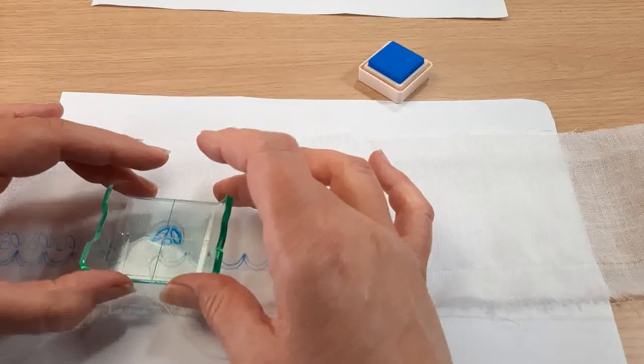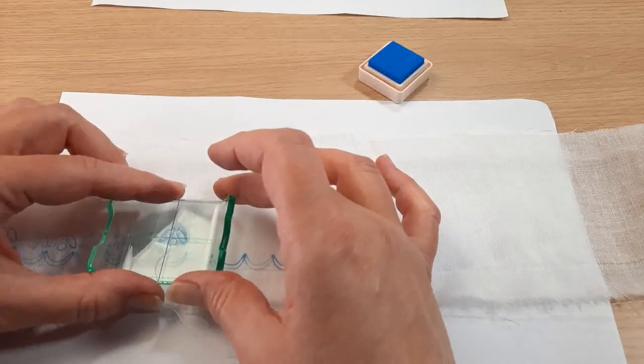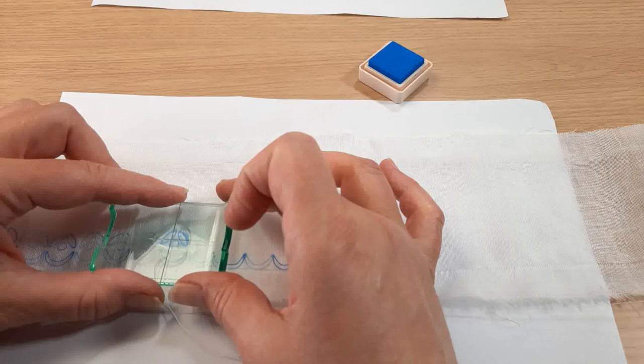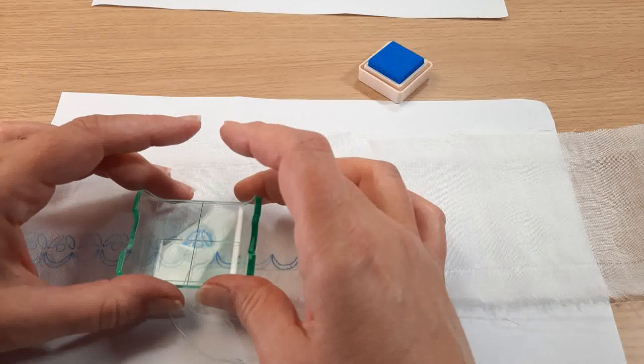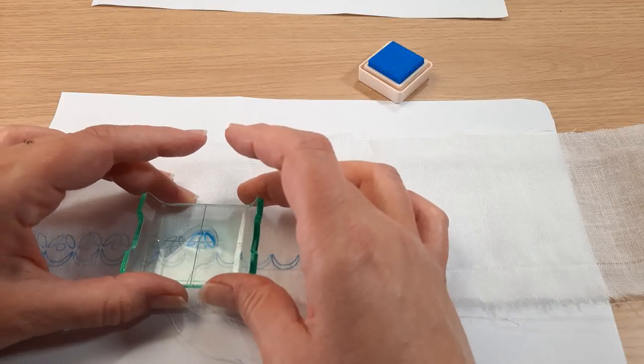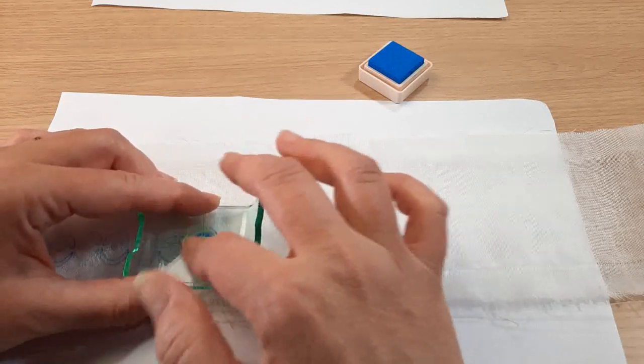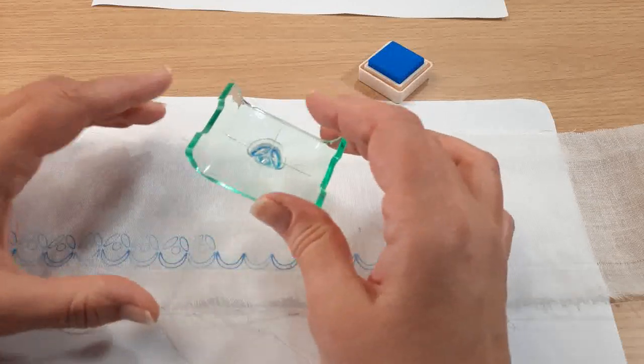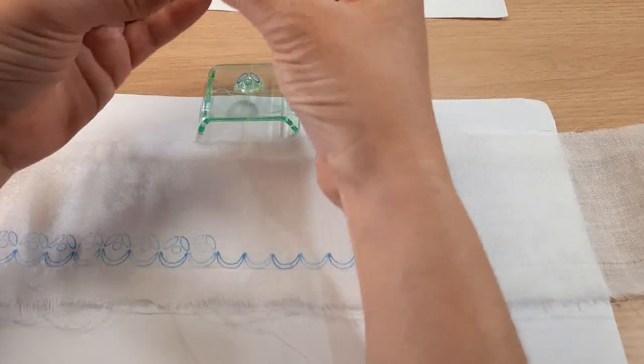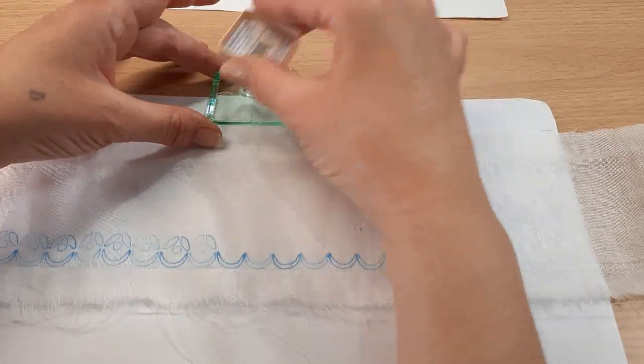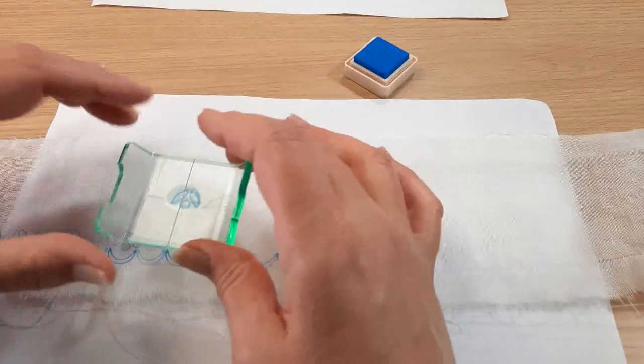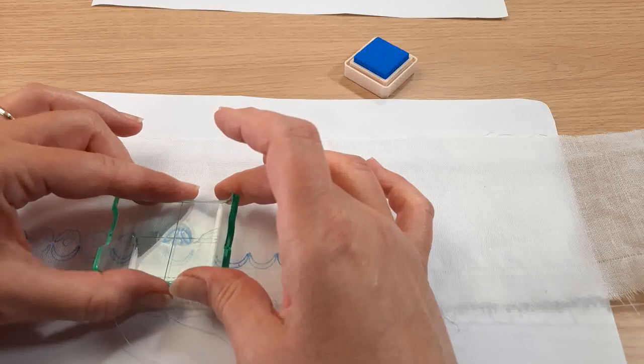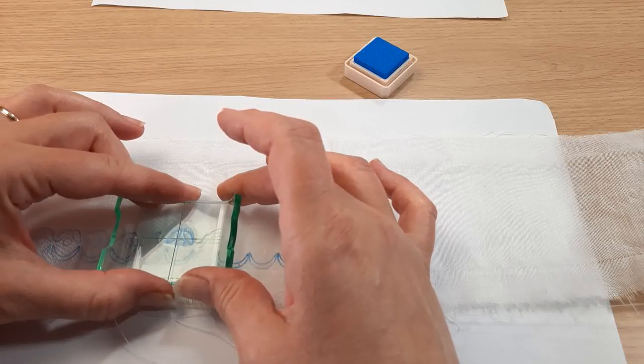If you've never stamped before, which I know a lot of textile people haven't, stamps can give a little if you push too hard and if that happens then you get a bigger line and sometimes like a blob as well so you do have to be careful not to put too much pressure on.